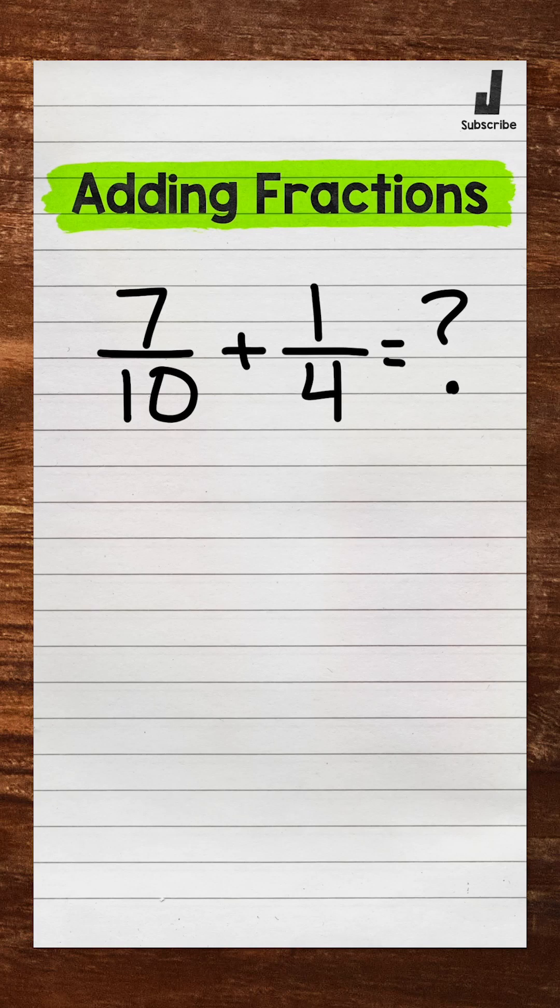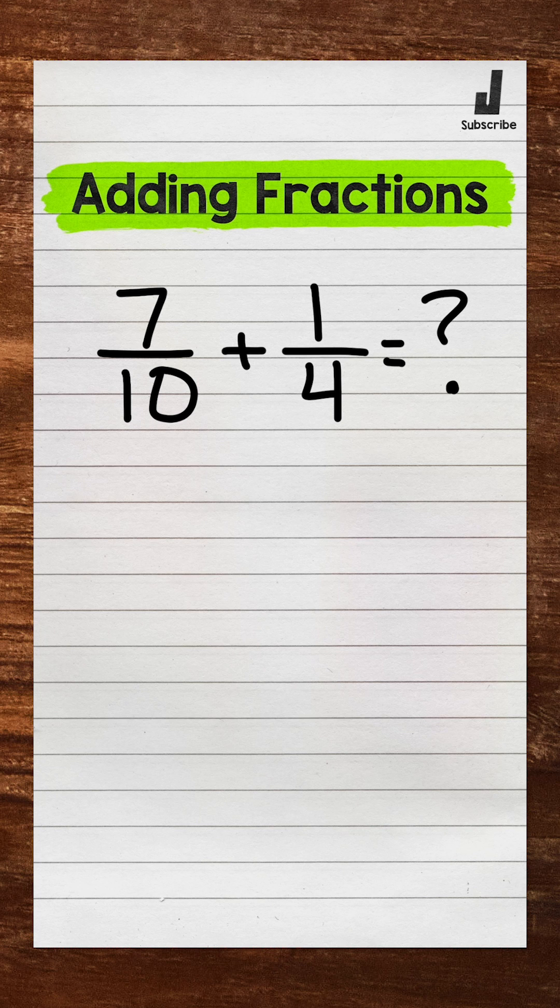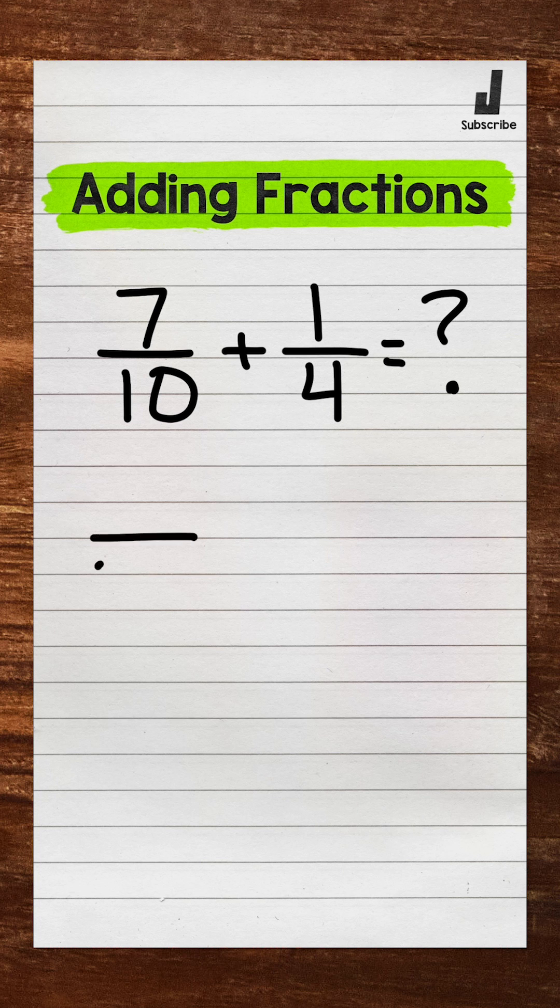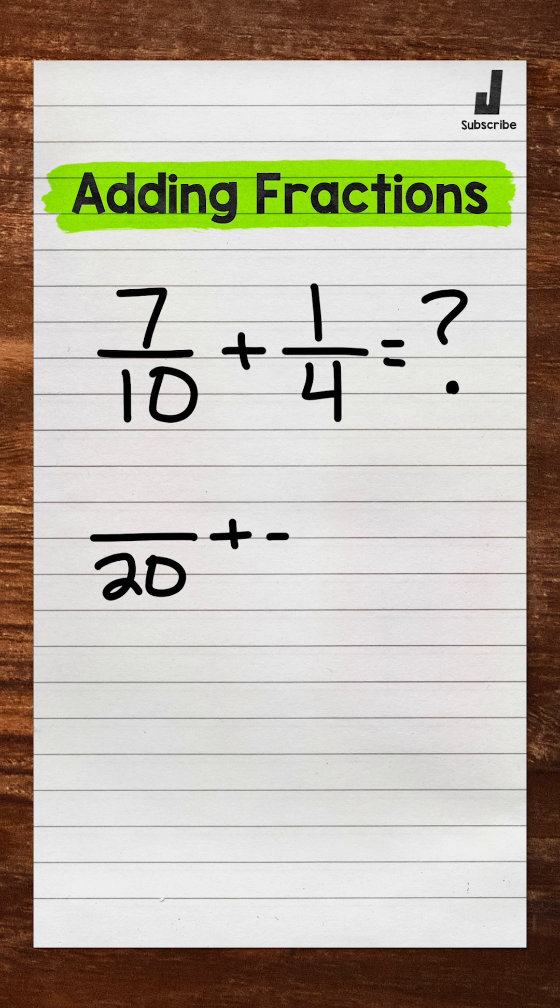This is Math with Mr. J. Let's add fractions with unlike denominators. We have 7 tenths plus 1 fourth. We need a common denominator to add. Now the least common multiple of our denominators will be the least common denominator. The least common multiple of 10 and 4 is 20, so let's rename these fractions with that denominator.